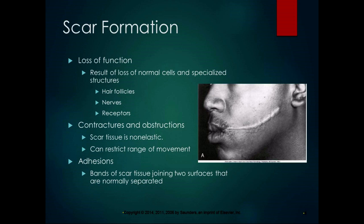With scar formation you often get loss of function because you lose normal cells and specialized structures like hair follicles, nerves, and receptors. Scar tissue is like the spackle of the body — you fill in the hole but it's not the same as the material around it, and it's probably a weaker spot. Scar tissue can cause contractures and obstructions; it's non-elastic and doesn't stretch like surrounding tissue, restricting range of movement. Adhesions are bands of scar tissue joining two surfaces that are normally separated.